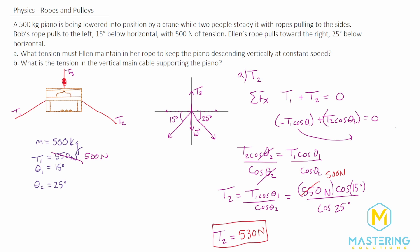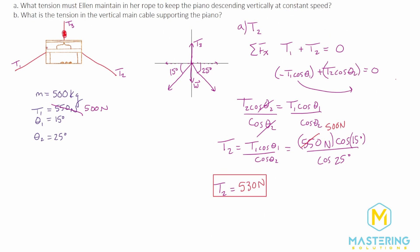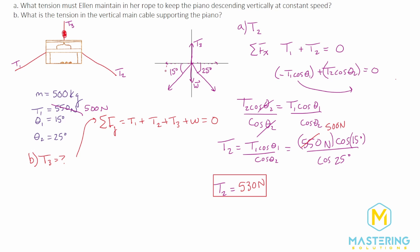Now for part B, we need to find T3, the tension in the vertical main cable. To find T3 we sum the forces in the y direction. The sum of forces in y equals the y component of T1 plus the y component of T2 plus the y component of T3 plus the weight, all equal to zero since the system is in dynamic equilibrium.